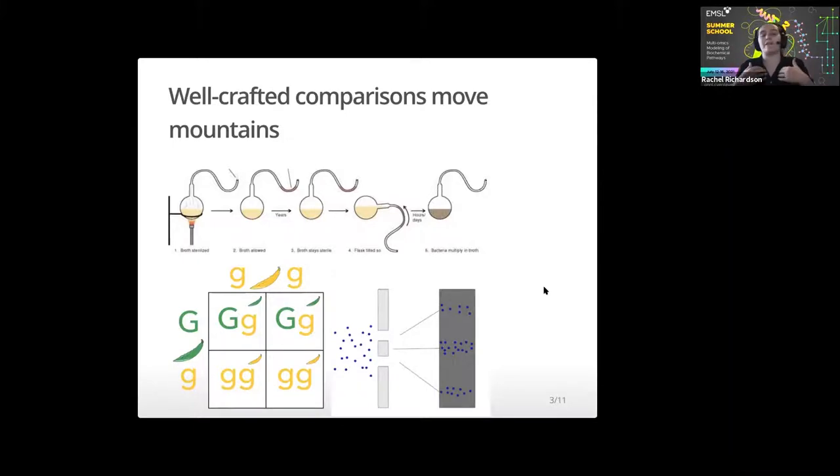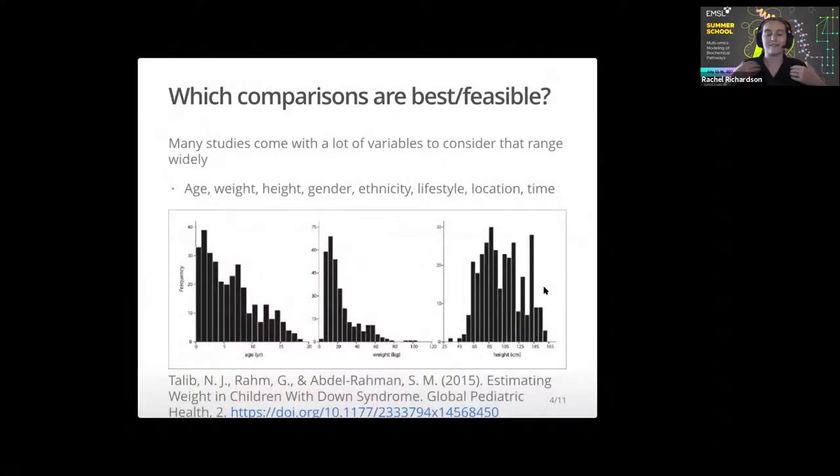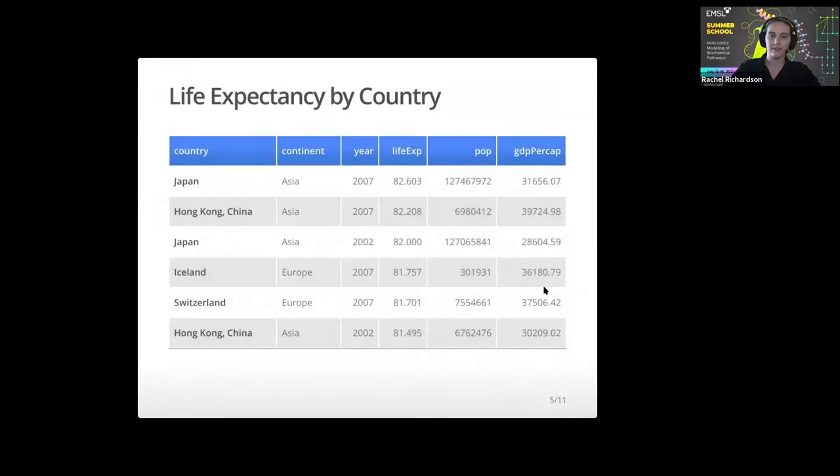Comparisons are really important to us as scientists. But the question is, how do we pick which ones we should move forward with? Technology allows us to collect so much data. And the second you step outside the lab, you have to contend with a huge amount of variables on huge ranges like age, weight, height, gender, all sorts of things. What do you risk if you pick the wrong comparison and you miss something that's a terrible oversight? As an example, we have a data set that's publicly available for life expectancy by country.